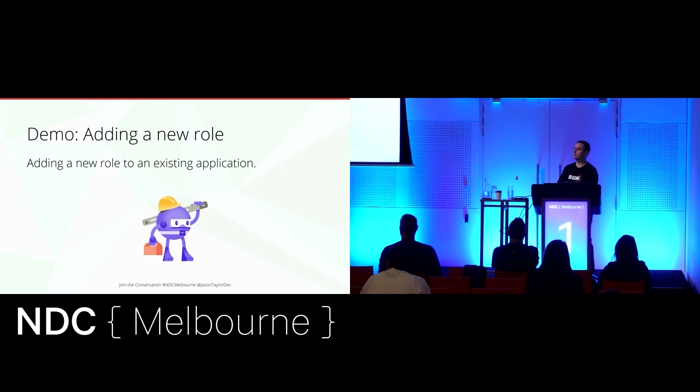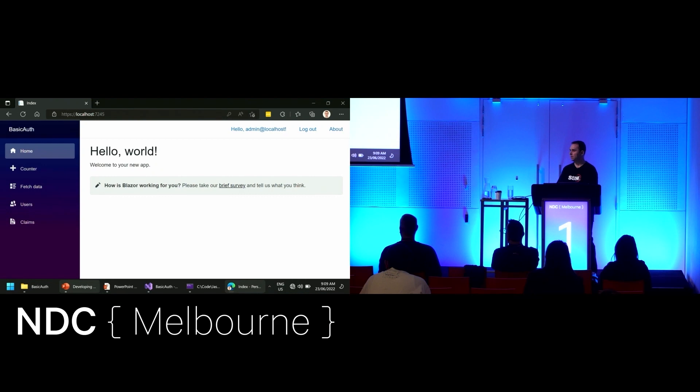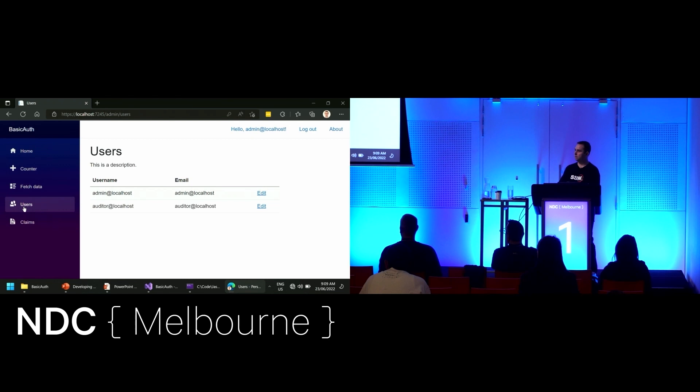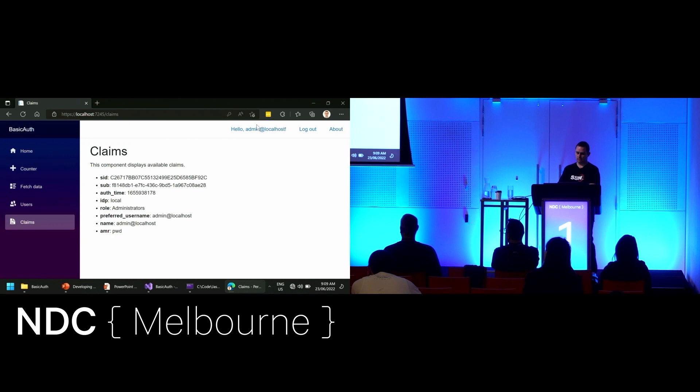Let's have a look at what it takes using the typical approach with ASP.NET Core authorization — role-based authorization — to add a new role to an existing application. In this scenario, we're going to add an auditor role to support certain requirements. This is the application: Blazor WebAssembly hosted on ASP.NET Core. I've built in some capabilities to manage users. You can see there's an admin and an auditor user, and in this form we can assign different roles. We can also see the claims associated with the user — I'm logged in as the administrator with a role claim value of administrators.